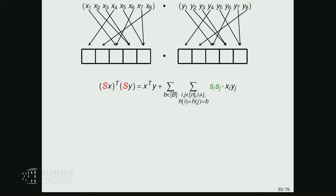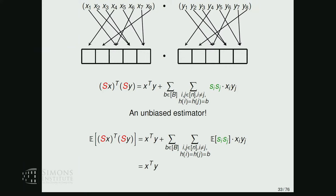In full generality, the dot product between count-sketched X and count-sketched Y equals the original dot product plus a sum over all buckets and all pairs of distinct coordinates I and J that hash to the same bucket. This is an unbiased estimator, simply because the expectation of the product of two random signs is zero.